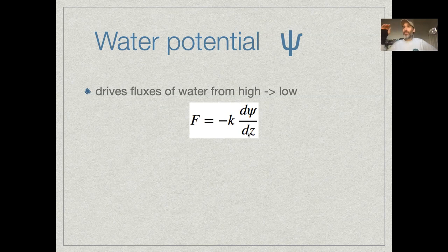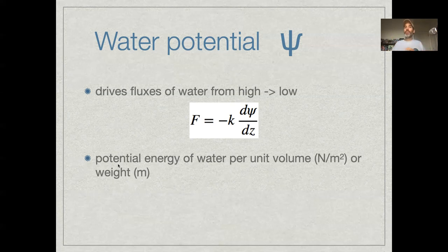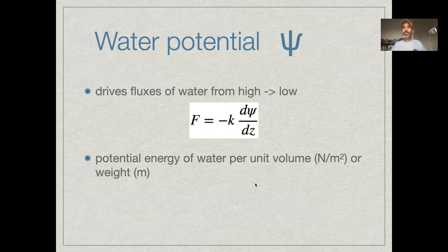And I'm using dz here because I'm often going to be thinking about this as vertically moving through a soil profile. Water is going to move on this concept of water potential from high potential to low potential. But what is water potential? The thing that drives fluxes of water are gradients in potential energy. So water potential is a measure of the potential energy of water, either on a per unit volume basis or on a per unit weight basis. When it's in a volume basis, it's newtons per square meter. And when it's on a weight basis, the units are actually meters.